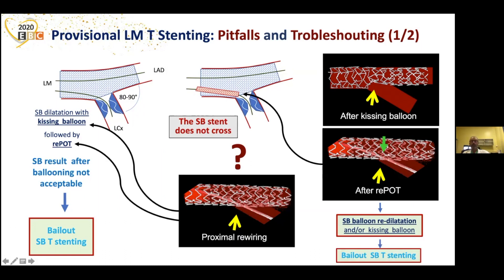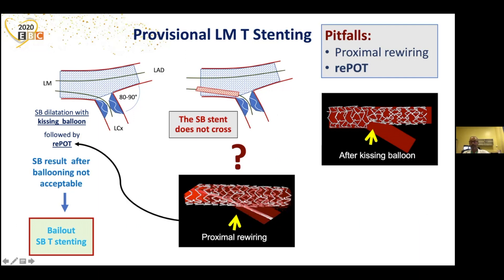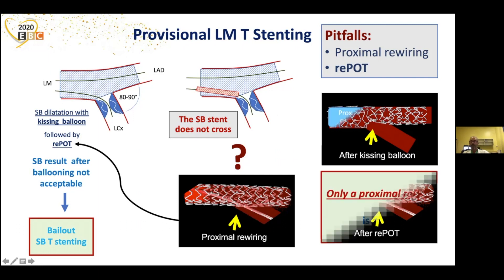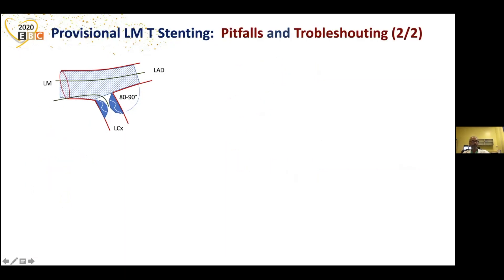The pitfall was the proximal rewiring and the repot, because the repot creates this jailing — it closes the door again. My suggestion is to avoid that first complete repot. After provisional stenting, probably only a proximal repot is safer in any case, because if you are unable to judge whether there was a proximal or distal rewiring, this is the safest way to proceed.